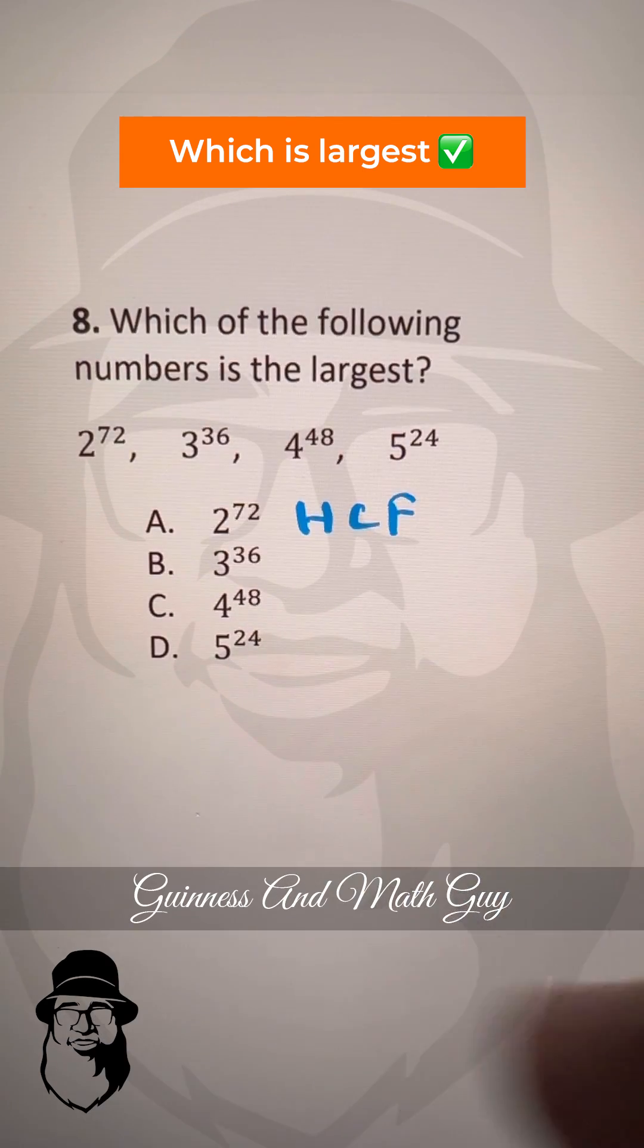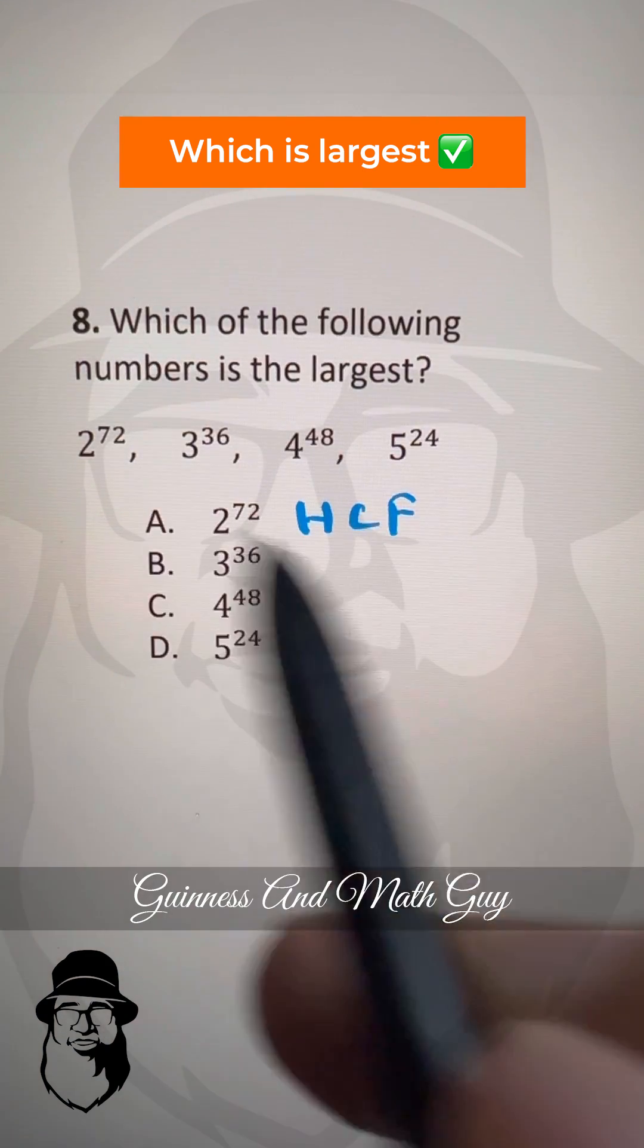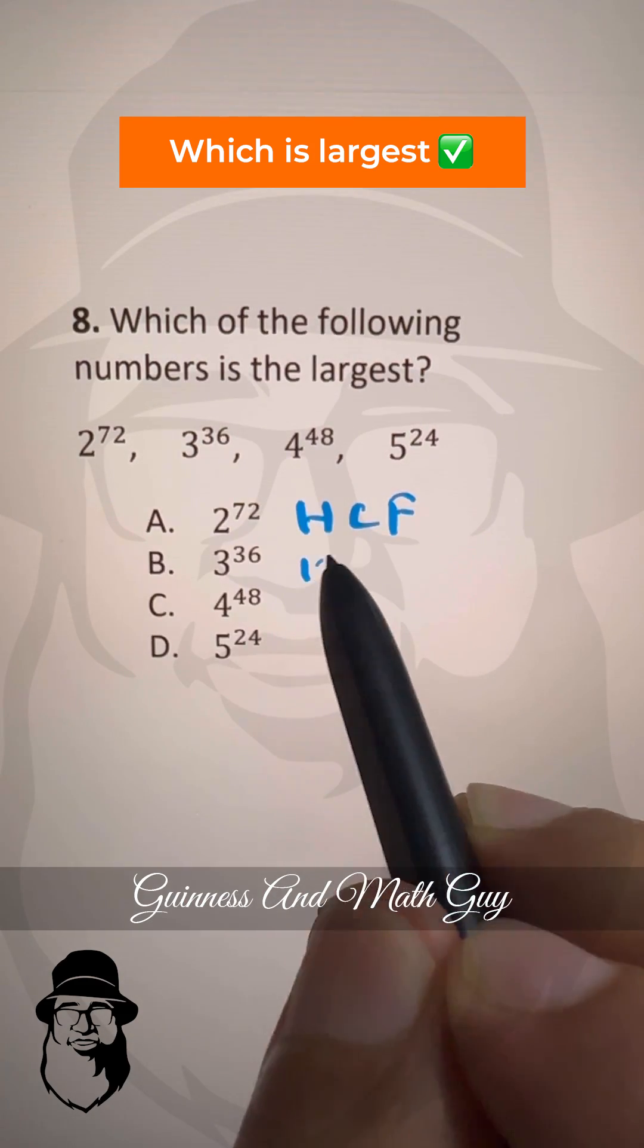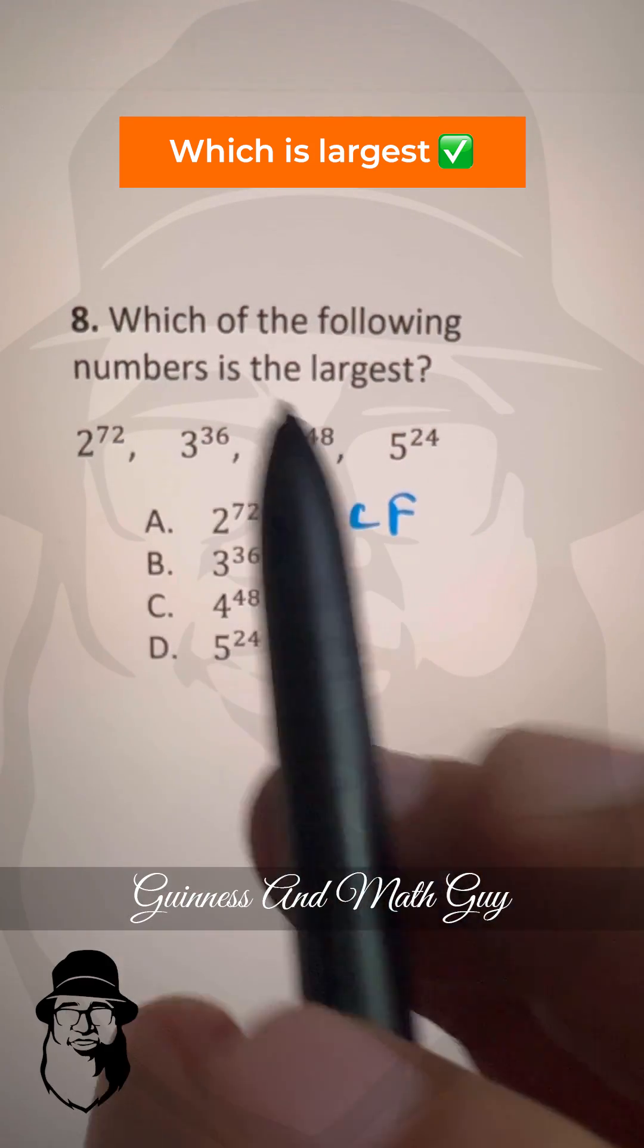HCF means highest common factor and HCF of this number is 12. And cancel out all these numbers by 12.